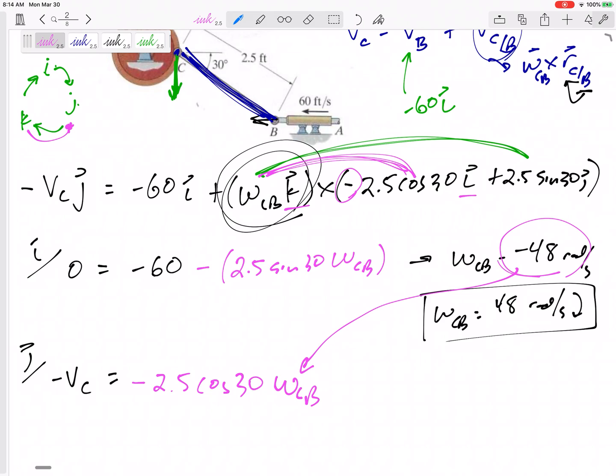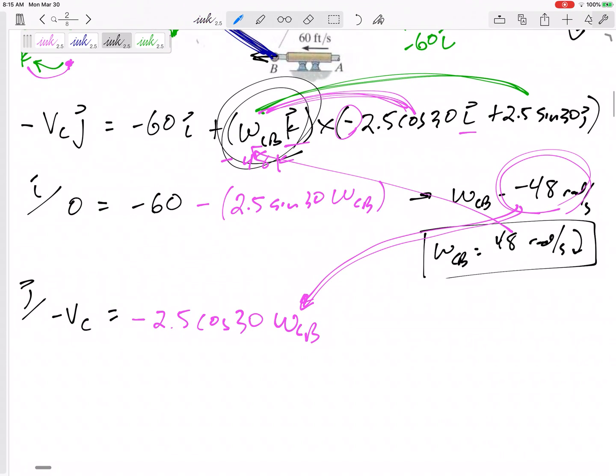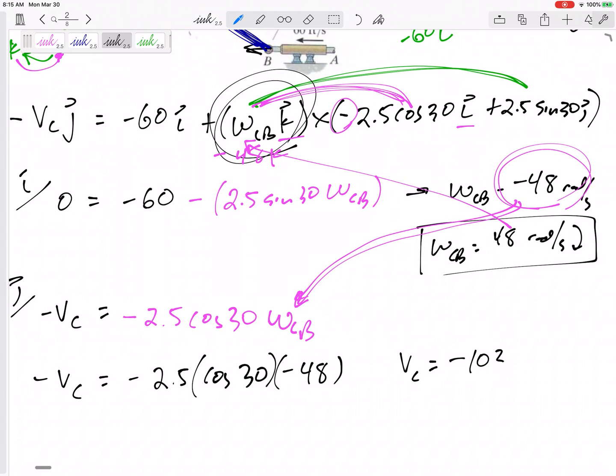All right. I could plug in the negative 48 just straight to here or I could have plugged in negative 48 K right there. Either way, this is what I've got. Let me be very careful with the math here. Negative VC negative 2.5 cosine 30 negative 48. There's my equation. And this would turn out to be VC of negative 103.92 feet per second.